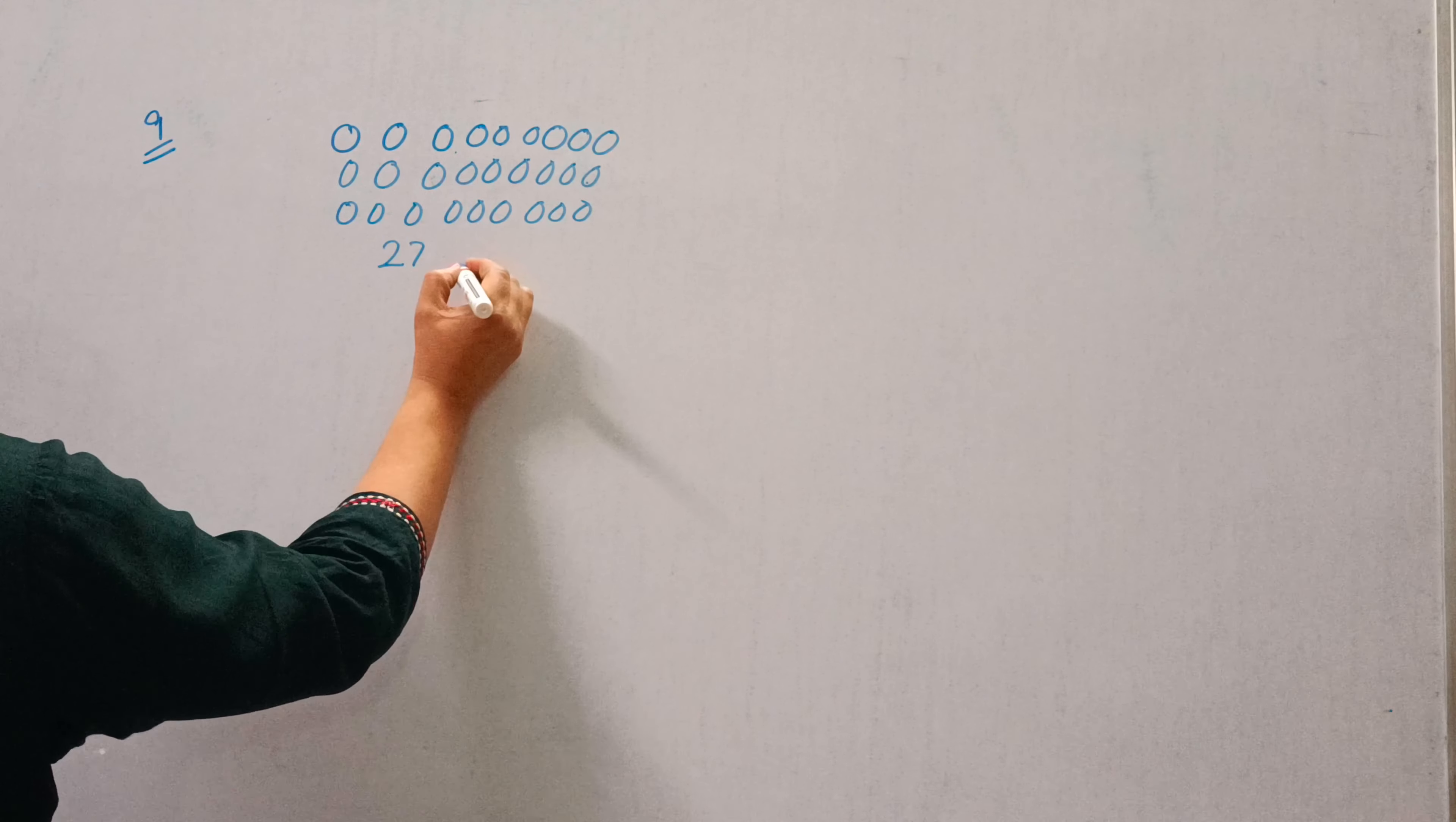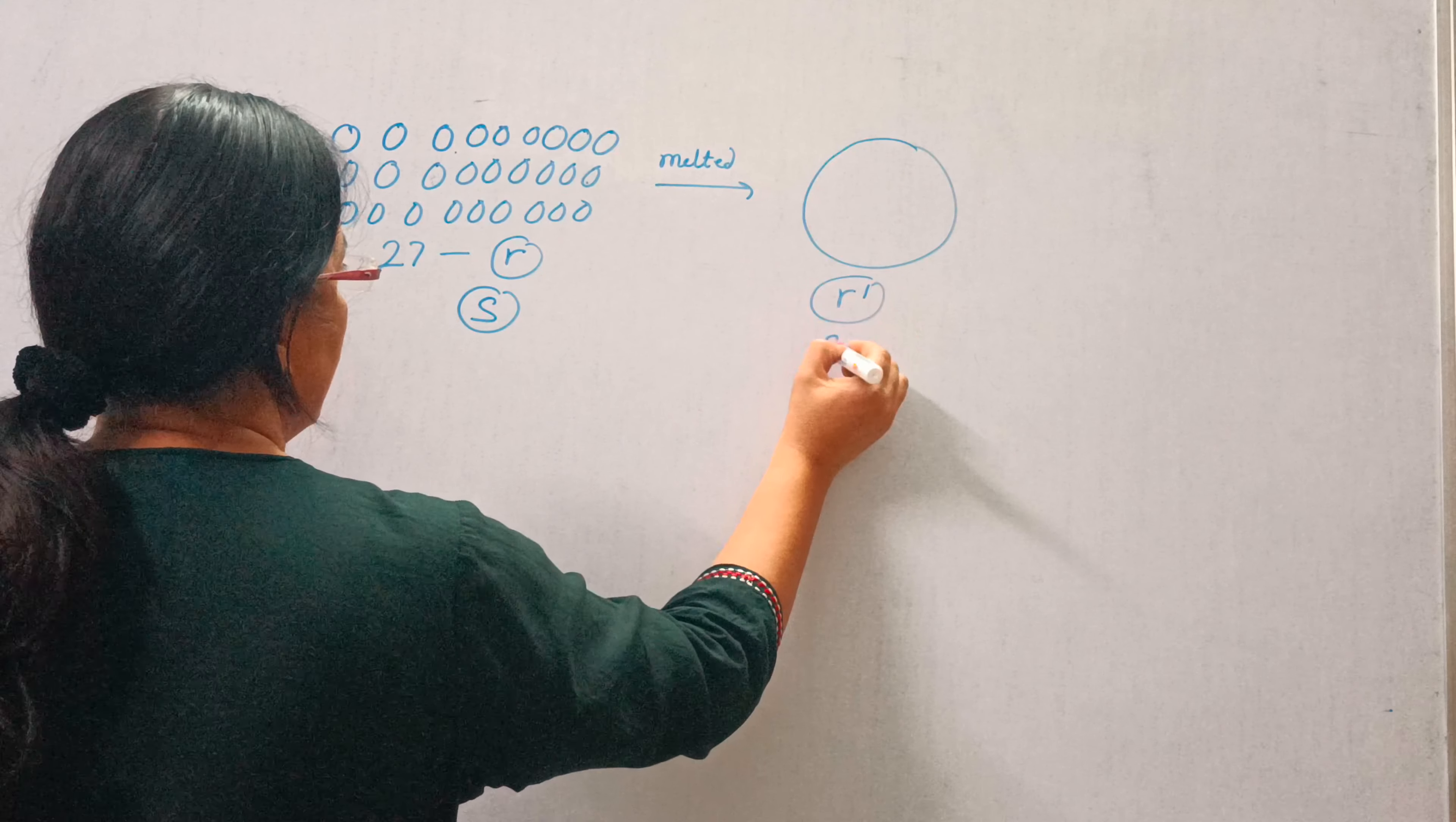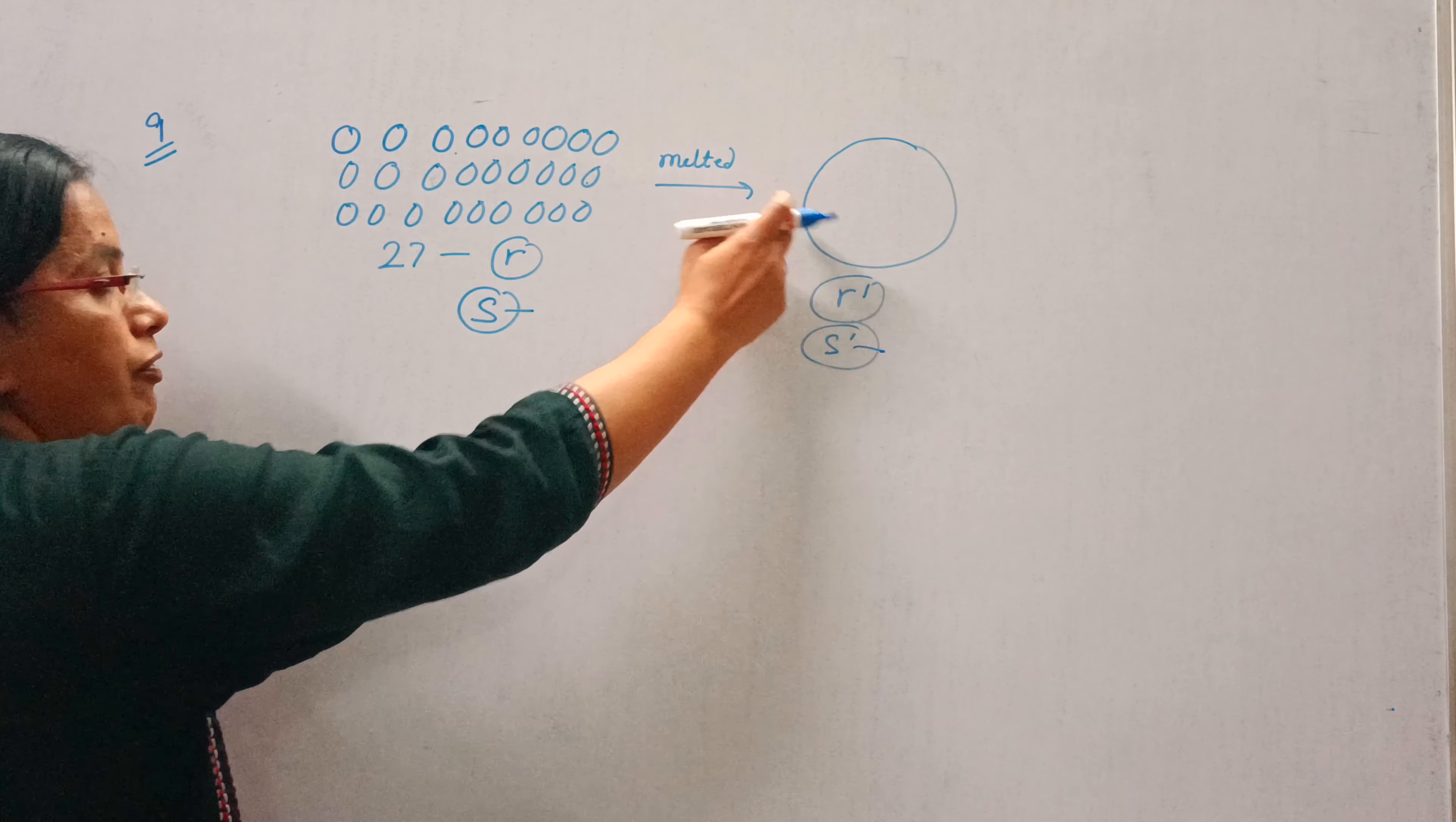27 small spheres of radius R, each of radius R and surface area S, are melted. These 27 small spheres are melted to form a sphere whose radius is R dash and surface area is S dash. Find the R dash of the new sphere and the ratio of S and S dash. This is the surface area of small sphere and this is the surface area of big sphere.